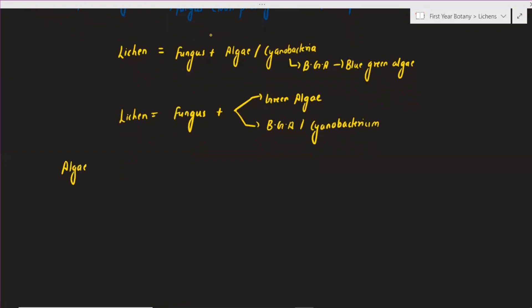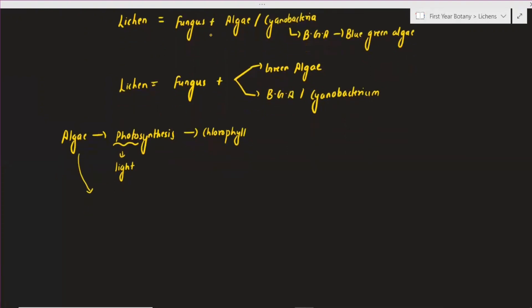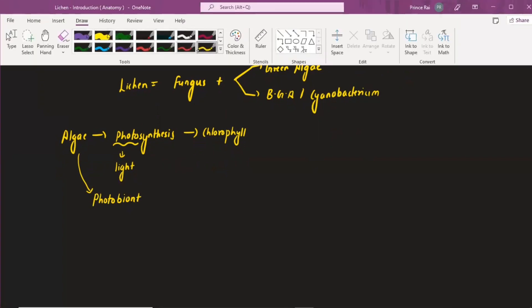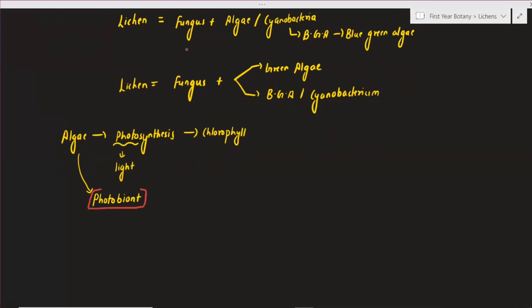What does algae do? Photosynthesis, obviously. In algae, photosynthesis occurs because there is chlorophyll. Chlorophyll is used in the photosynthesis process. With the help of light — photons of light — organic food is synthesized. The prefix 'photo' refers to light. For the algae component, we denote it as 'photobiont.' This is a very important point to be noted.